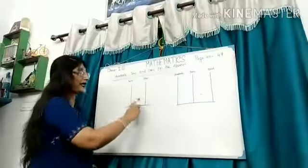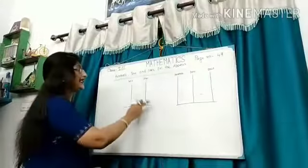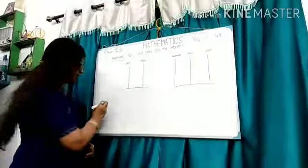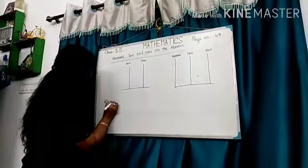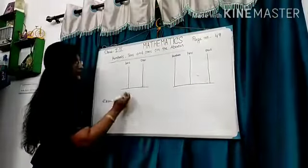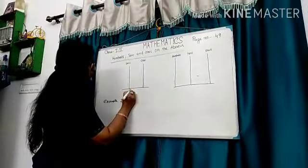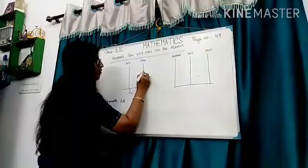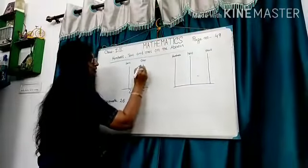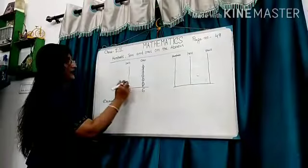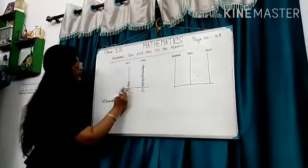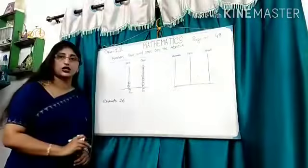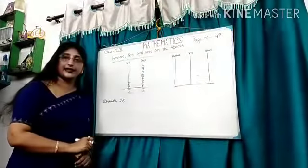For example, 26. 1, 2, 3, 4, 5, 6. 6 1s. 1, 2, 2 10s. 2 10s, 6 1s. So the number is 26.